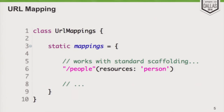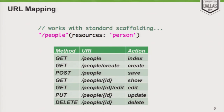HTTP request methods are an important part of how this works. When you define a mapping like this, a bunch of mappings get created dynamically by the framework. Several of these all point to the same URL, but requests are handled by potentially different controller actions dictated by the HTTP request method. For example, a GET to /people executes the index action, while a POST to /people executes the save action — and so forth. All of these mappings are created from just that one line in your URL mappings.